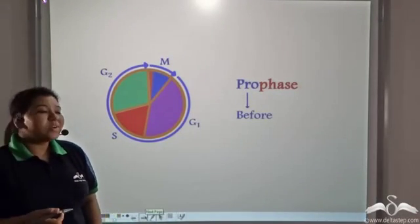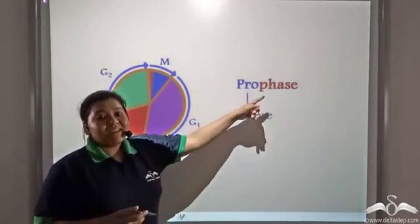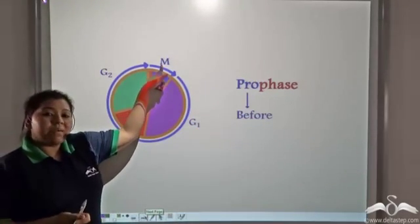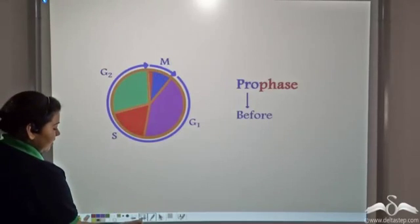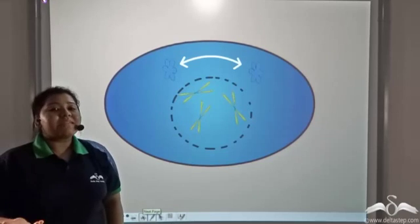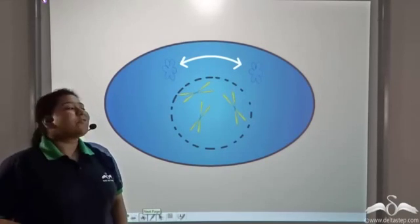This phase is known as the prophase. It is the first phase of the mitotic or the M phase. Prophase, where pro means before, let us see what is happening. The chromosomes are getting compacted.